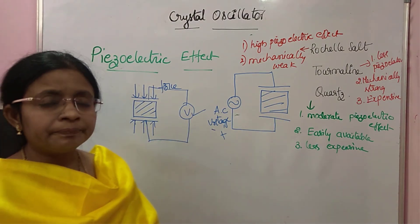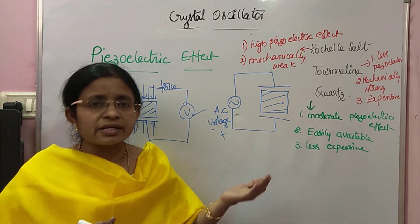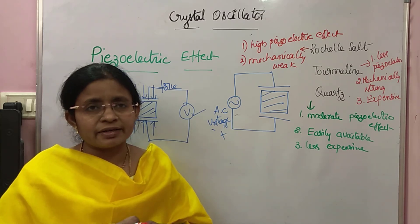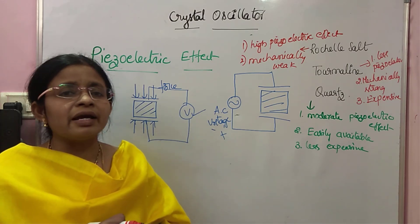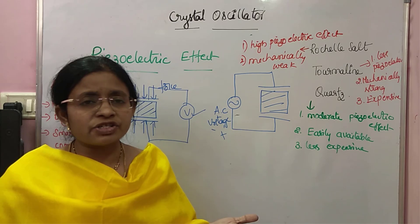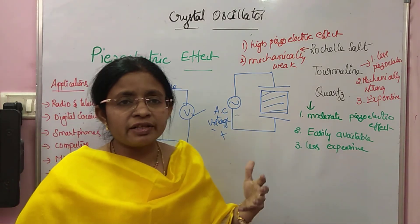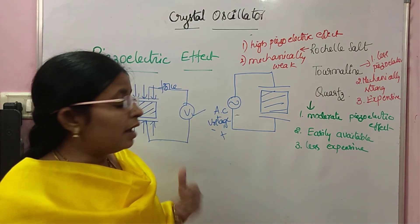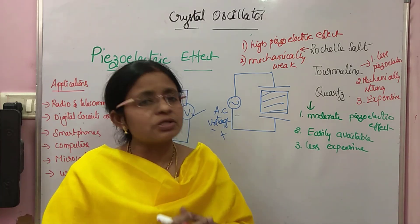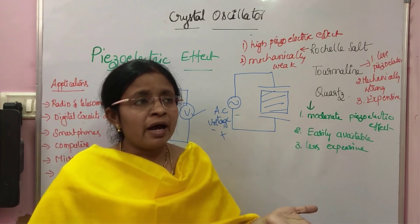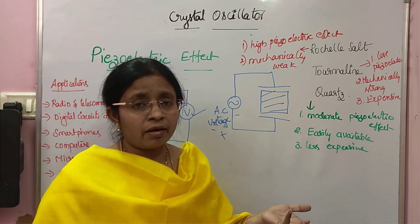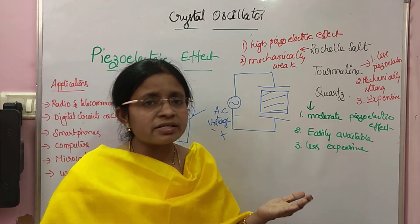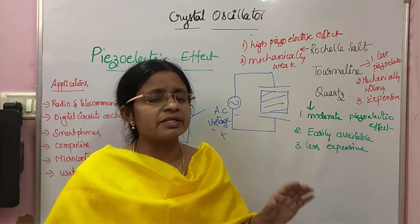Why are we going for a crystal oscillator? We have seen many oscillators like RC oscillators and LC oscillators — RC phase shift oscillator, Wein bridge oscillator, Hartley oscillator, Colpitts oscillator. But those RC and LC oscillators are not stable. Whenever there is a change in temperature, the property of generating the waveform changes. Also, when there is a change in transistor parameters or a change in power supply, they cannot generate a stable waveform. These three are the main disadvantages of RC and LC oscillators.